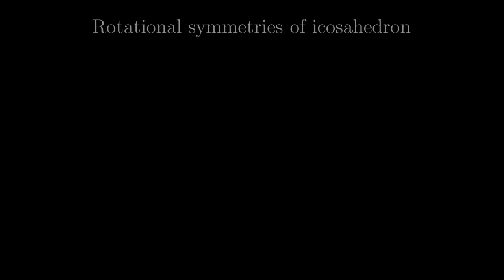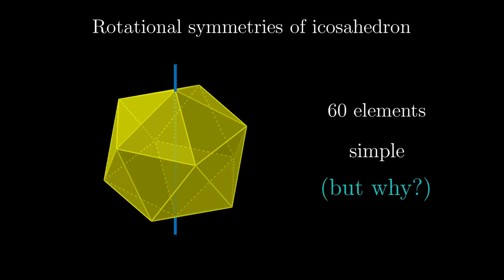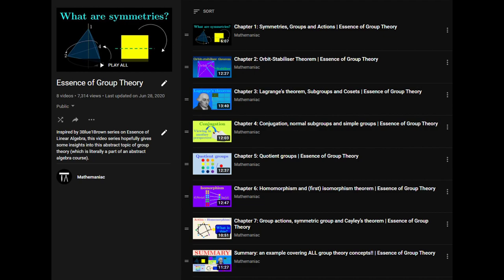In a summary of the previous video series, I briefly mentioned in the last bit that the group of rotational symmetries of an icosahedron has 60 elements and is simple. I didn't exactly explain why, and instead urged you to think using the intuitions developed throughout the video series.